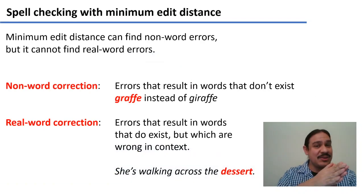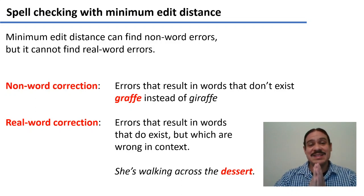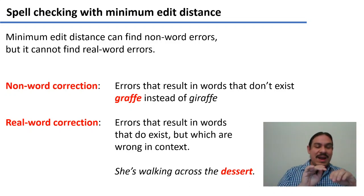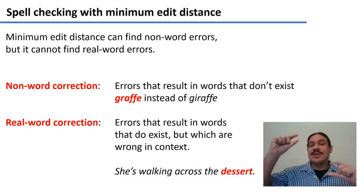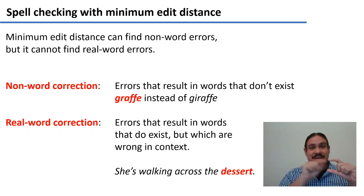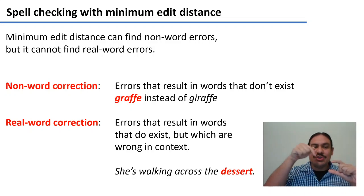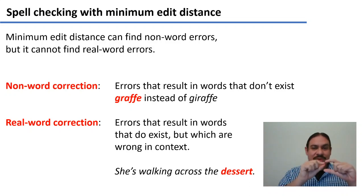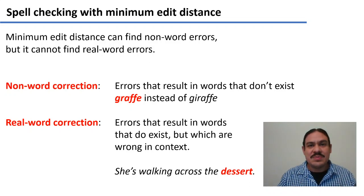In the last video we looked at an algorithm called minimum edit distance, which was very good at finding non-word errors. For example, if you typed 'acris' instead of 'giraffe', that word is not an English word — you could look for it in a dictionary and not find it. But you could try to find the words that resemble it the most, that have the minimum edit distance, such as 'giraffe', where you only need to insert an 'i'. Minimum edit distance could offer good suggestions for spelling corrections.